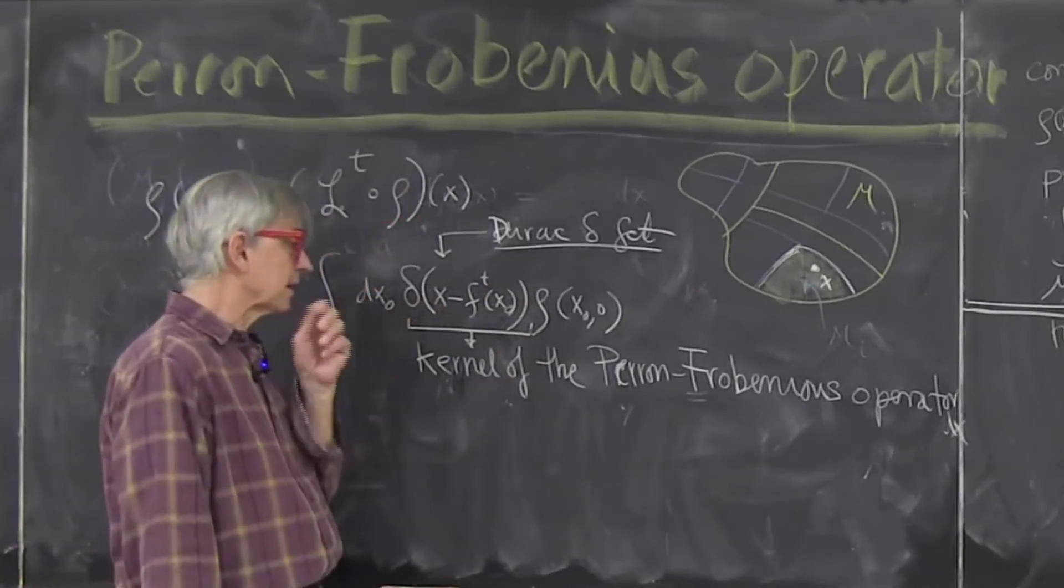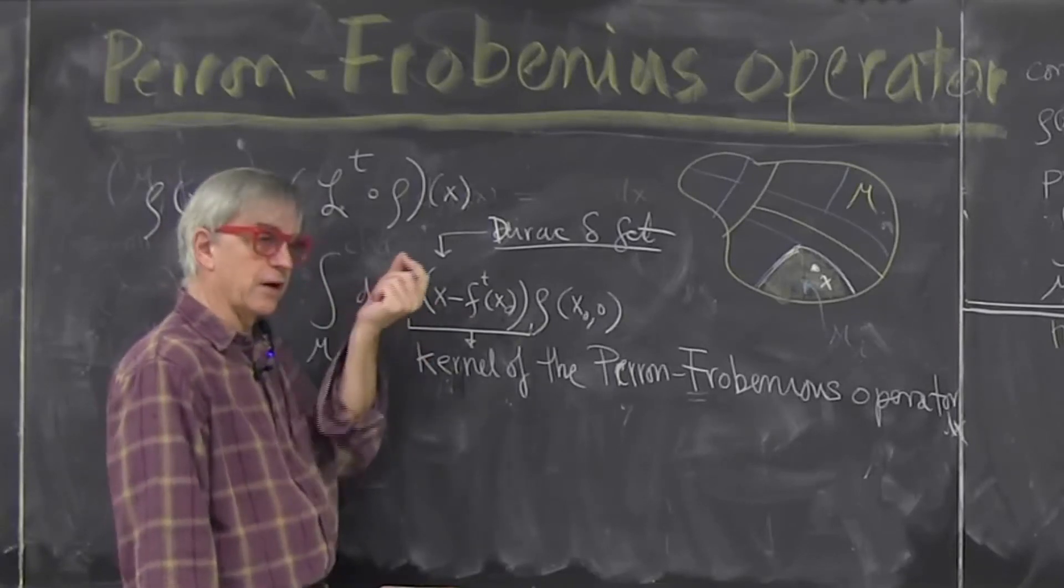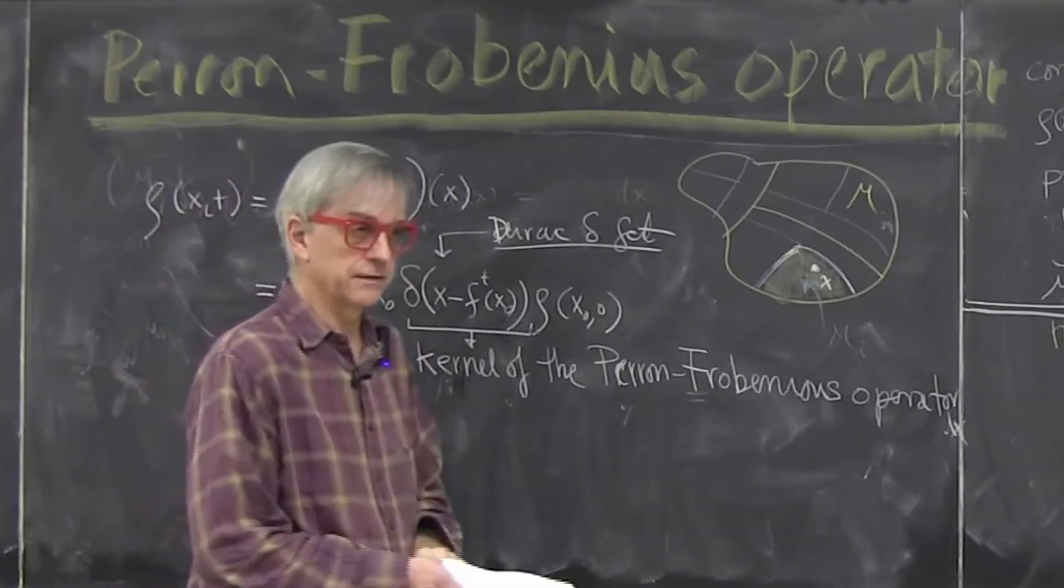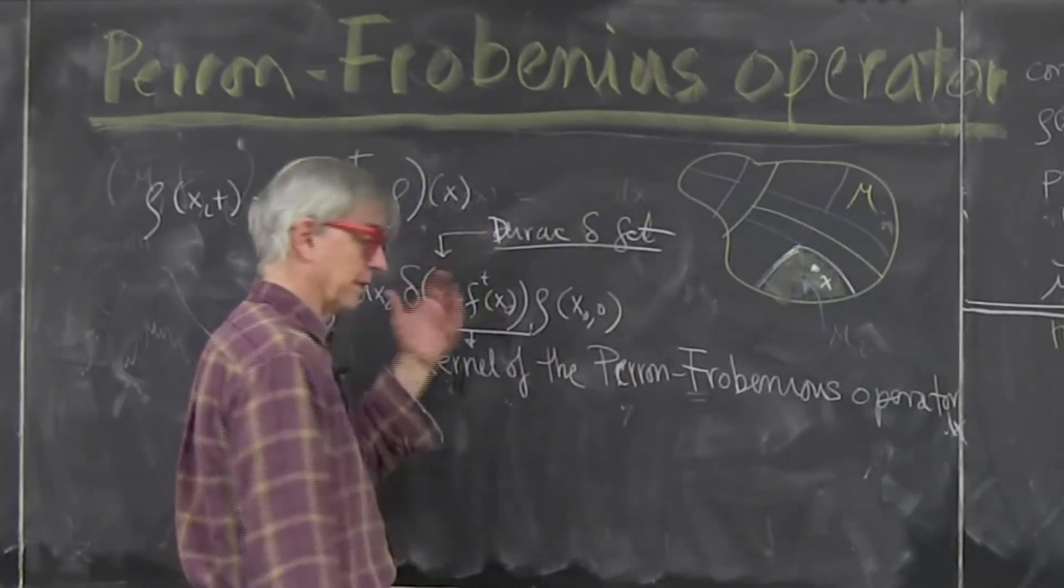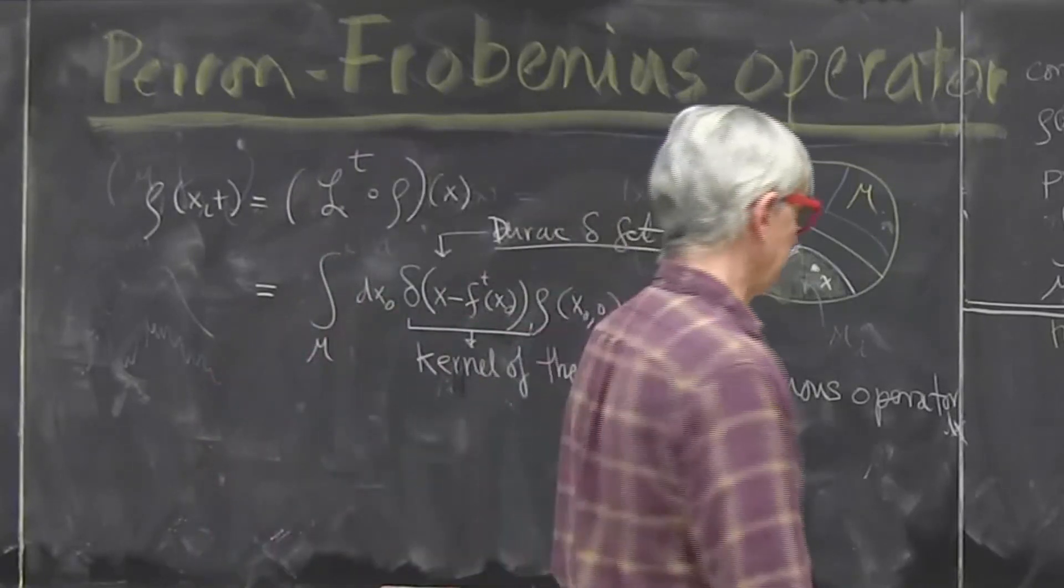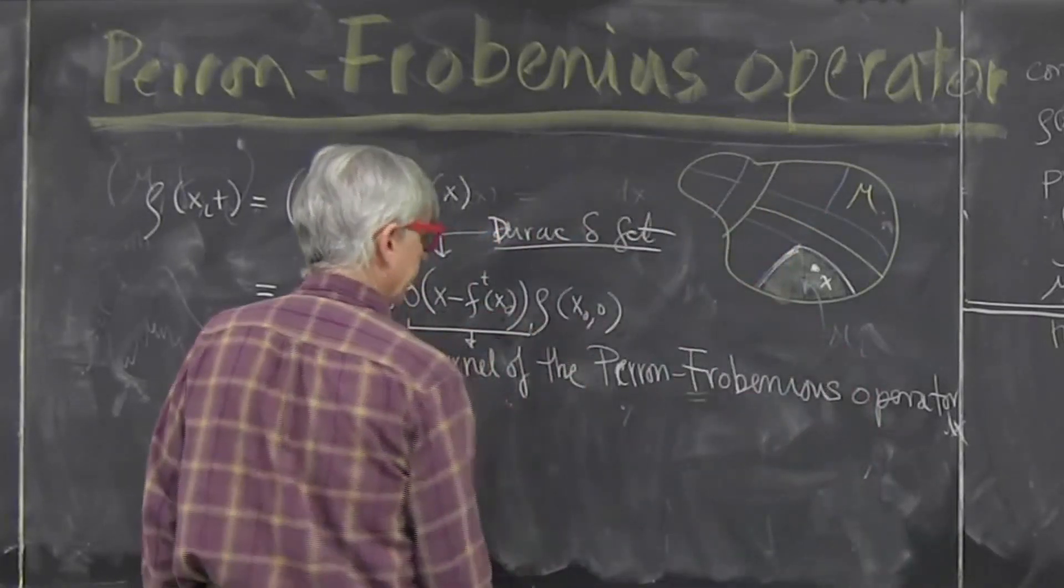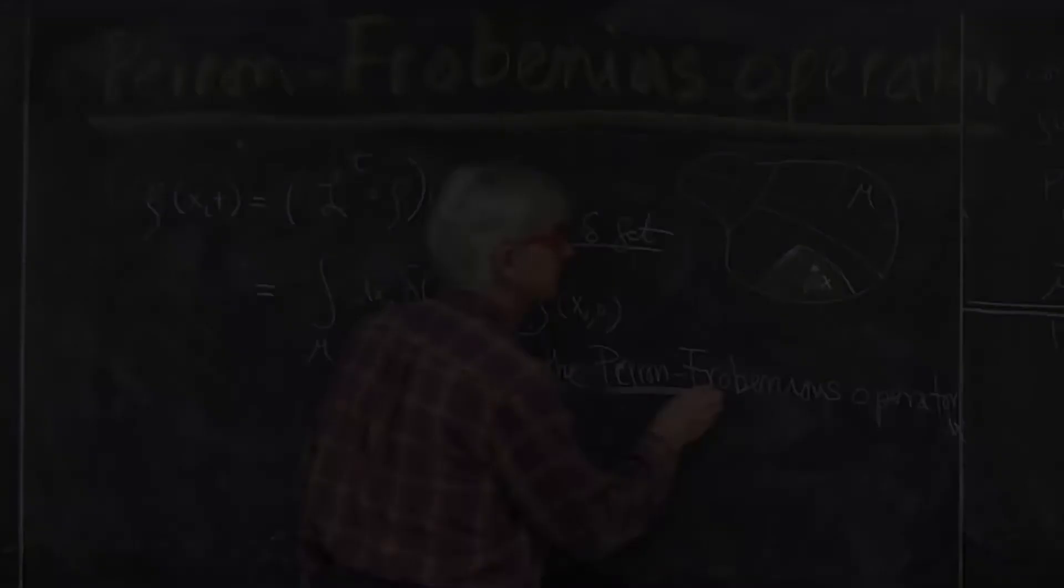When we start looking at stochastic processes this might be a narrow Gaussian rather than a Dirac delta function and in quantum mechanics this will be called unitary evolution operator, Green's function, all kinds of other things but that's all it is.